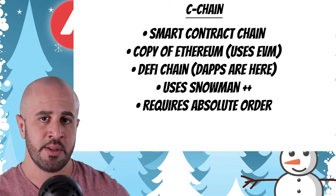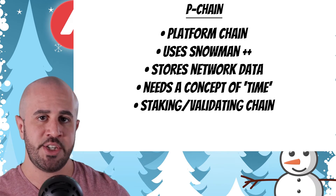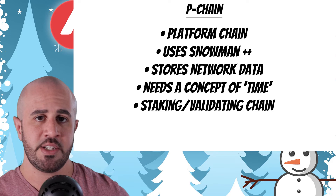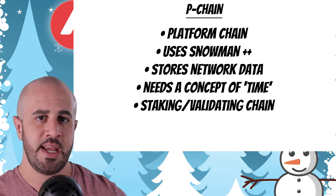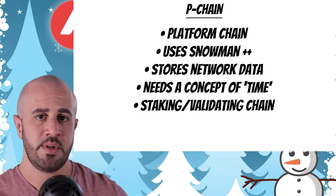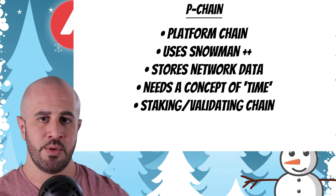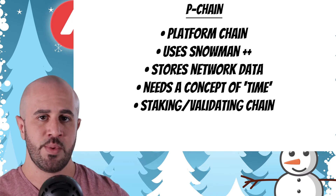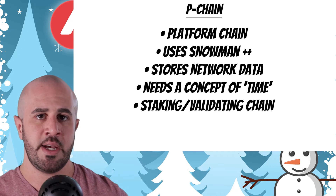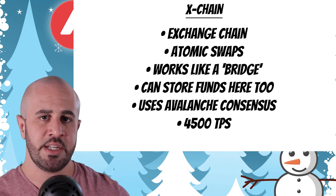The C chain is where you're going to do all your DeFi stuff — decentralized exchanges, lending and borrowing apps, all of that. Next we have the P chain, which is short for the platform chain. The P chain is where you do your staking, whether you want to become a validator on the network or delegate your AVAX tokens to someone who is a validator.